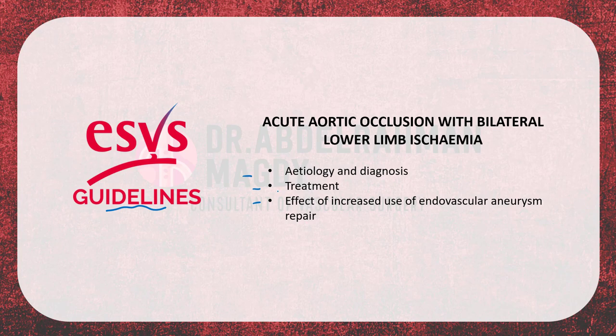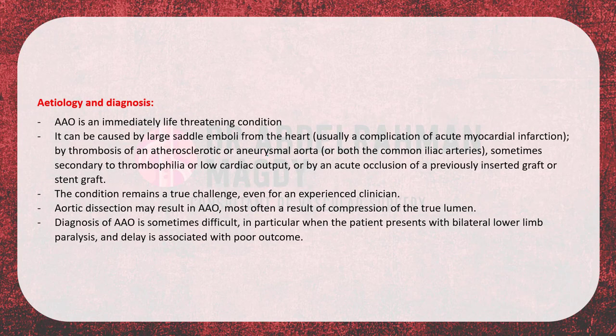Regarding acute aortic occlusion with bilateral lower limb ischemia, we'll cover etiology, diagnosis, treatment, and the effect of increased use of endovascular aneurysm repair. Acute aortic occlusion is an immediately life-threatening condition — a major threat to life rather than just the limb. It can be caused by a large saddle embolus from the heart, usually a complication of acute myocardial infarction, or by thrombosis of an atherosclerotic or aneurysmal aorta or both common iliac arteries.